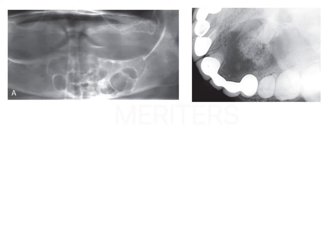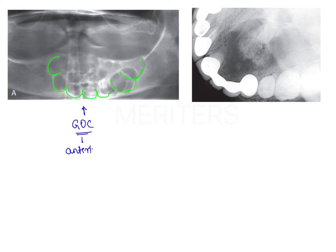Moving on to the glandular odontogenic cyst: here you can appreciate a multilocular radiolucent lesion, and the most important point is the location. The glandular odontogenic cyst has a predilection for the anterior mandible, which is well demonstrated in the OPG shown here.